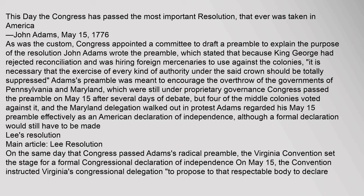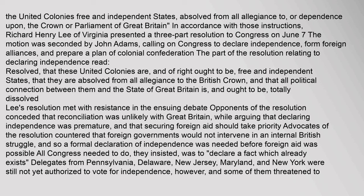On the same day that Congress passed Adams's radical preamble, the Virginia Convention set the stage for a formal congressional declaration of independence. On May 15, the convention instructed Virginia's congressional delegation to propose to that respectable body to declare the united colonies free and independent states, absolved from all allegiance to, or dependence upon, the Crown or Parliament of Great Britain. In accordance with those instructions, Richard Henry Lee of Virginia presented a three-part resolution to Congress on June 7. The motion was seconded by John Adams, calling on Congress to declare independence, form foreign alliances, and prepare a plan of colonial confederation. The resolution read: 'Resolved, that these united colonies are, and of right ought to be, free and independent states, that they are absolved from all allegiance to the British Crown, and that all political connection between them and the state of Great Britain is, and ought to be, totally dissolved.' Lee's resolution met with resistance: opponents conceded that reconciliation was unlikely with Great Britain, while arguing that declaring independence was premature, and that securing foreign aid should take priority.